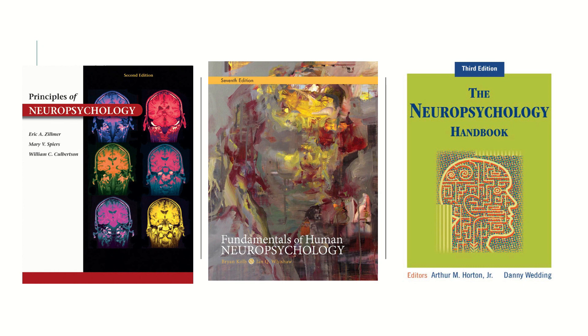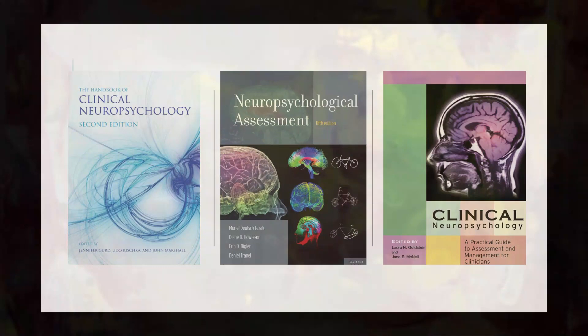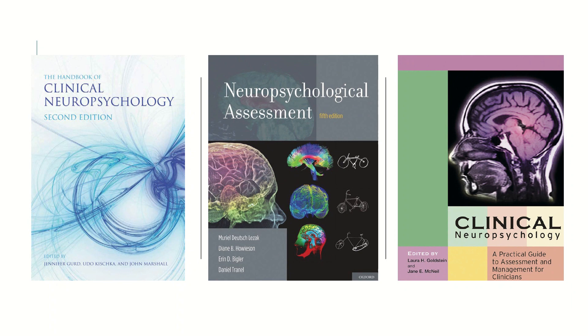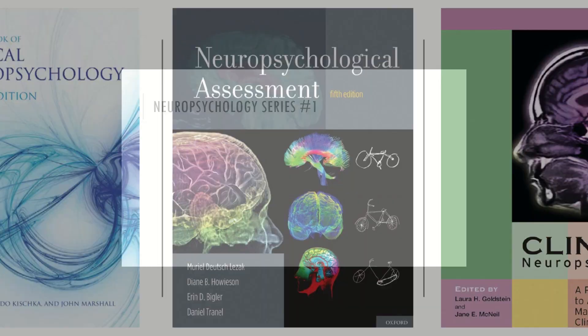The first is the Principles of Neuropsychology. The second is the Fundamentals of Human Neuropsychology. The third is the Neuropsychology Handbook. The fourth is Clinical Neuropsychology, the second edition. The fifth is the Neuropsychological Assessment by Leszac. And the sixth is Clinical Neuropsychology by Larry Gornstein and Jenny MacNeil.